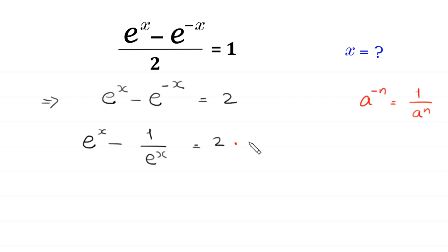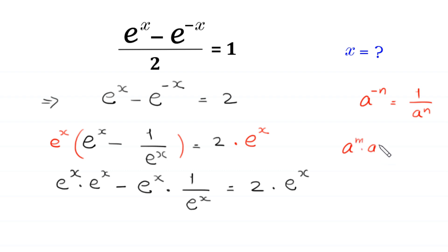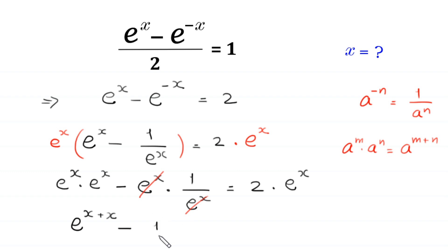Now from here, we multiply both sides of this equation by e to the power x. On the left side, e to the power x times e to the power x minus e to the power x times 1 over e to the power x is equal to 2 times e to the power x. By using the power rule a to the power m times a to the power n equals a to the power m plus n, e to the power x times e to the power x becomes e to the power x plus x, and e to the power x cancels with e to the power x in the denominator, leaving 1 is equal to 2 times e to the power x.